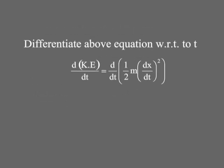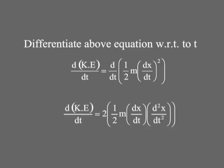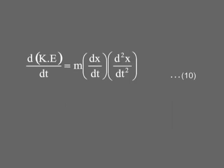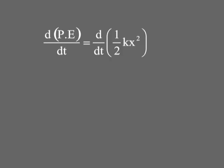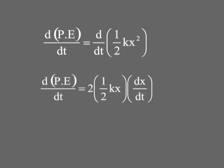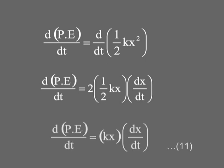Differentiating kinetic energy with respect to t: d(KE)/dt = m(dx/dt)(d²x/dt²), which is equation 10. Potential energy = ½kx². Differentiating with respect to t: d(PE)/dt = kx(dx/dt), which is equation 11.